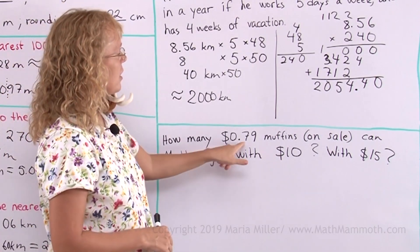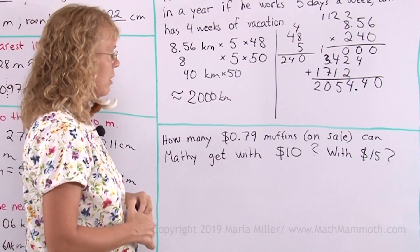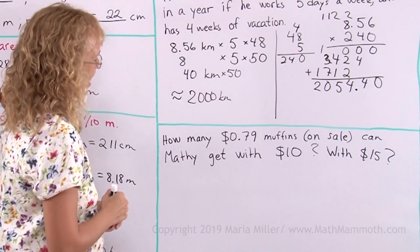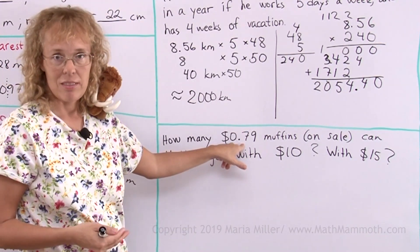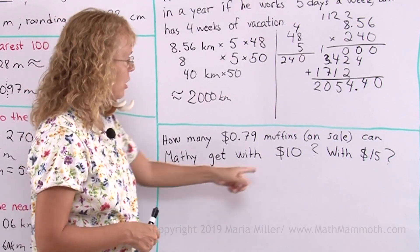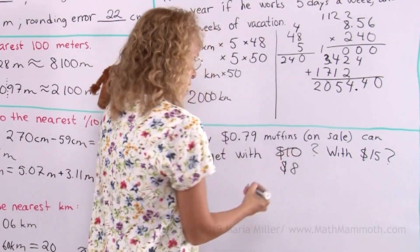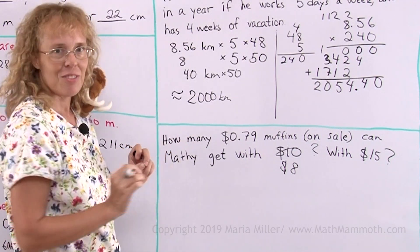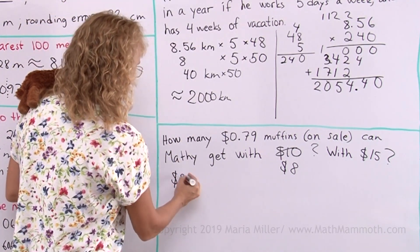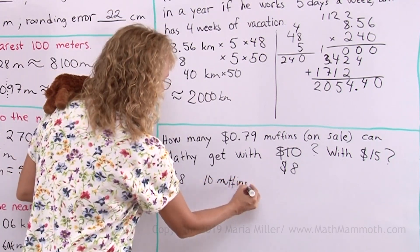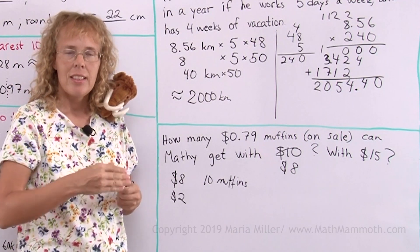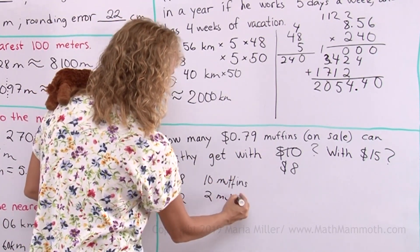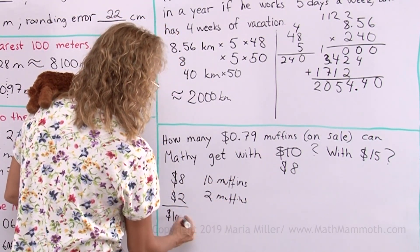Lastly, how many 79 cent muffins on sale can Mathie get with 10 dollars? Must be blueberry muffins huh? Oh yeah. You know what, if I estimate, I'll use 80 cents. This would be so much easier if this was 8 dollars Mathie. Well, I'm not totally changing it Mathie. I just want to figure it with 8 dollars at first. With 8 dollars, Mathie would get 10 muffins. How about with 2 dollars? You can only get 2 muffins with 2 dollars. He cannot get 3. So 2 muffins. So in total, with 10 dollars, you will get 12 muffins.